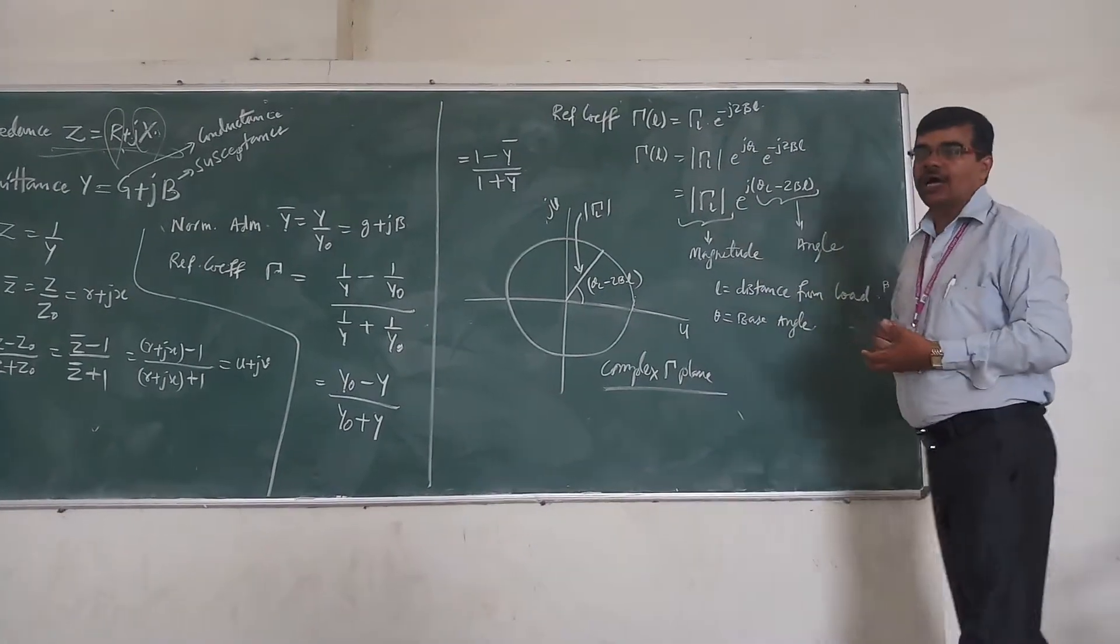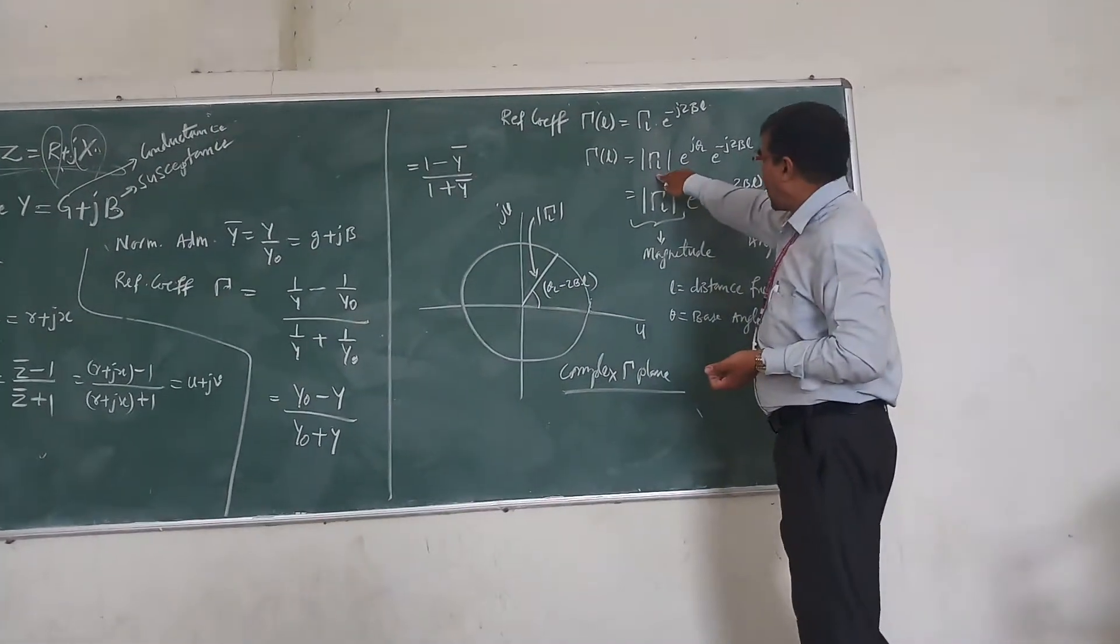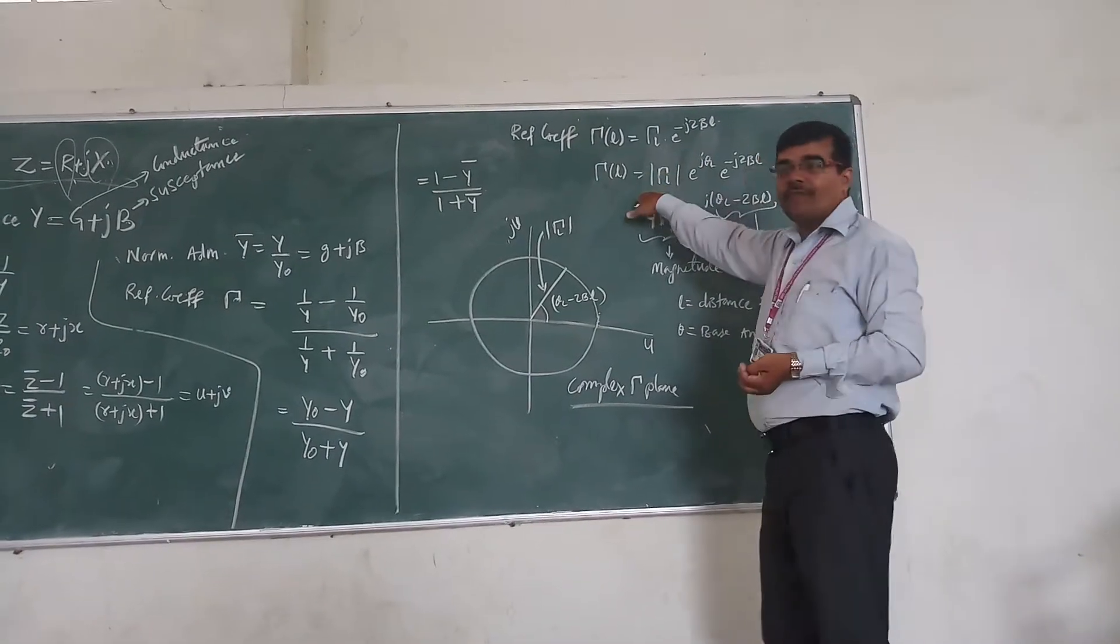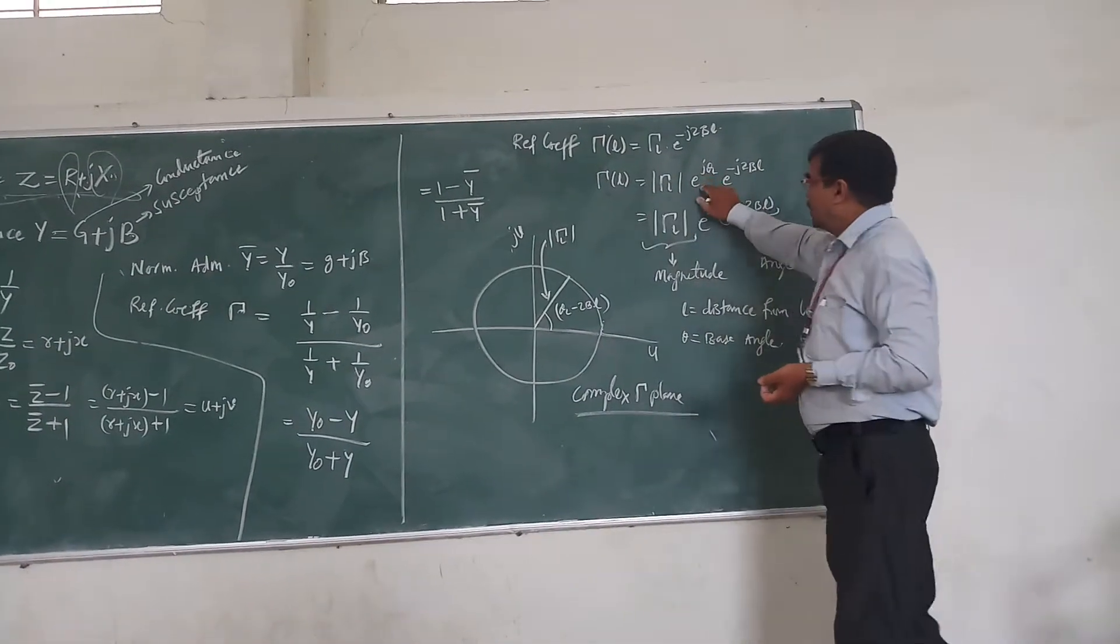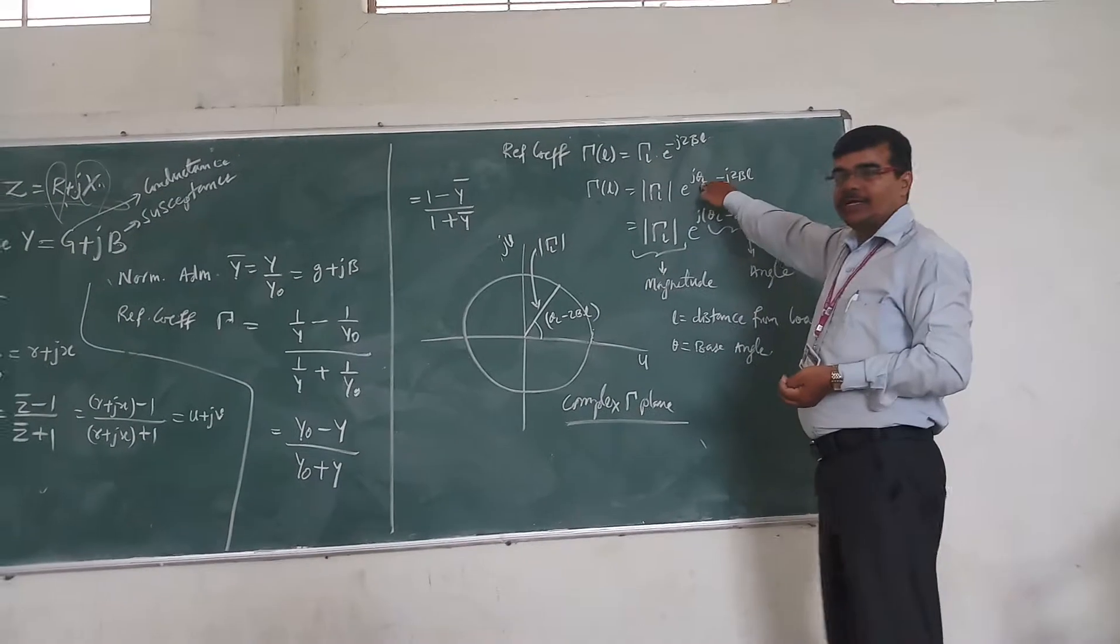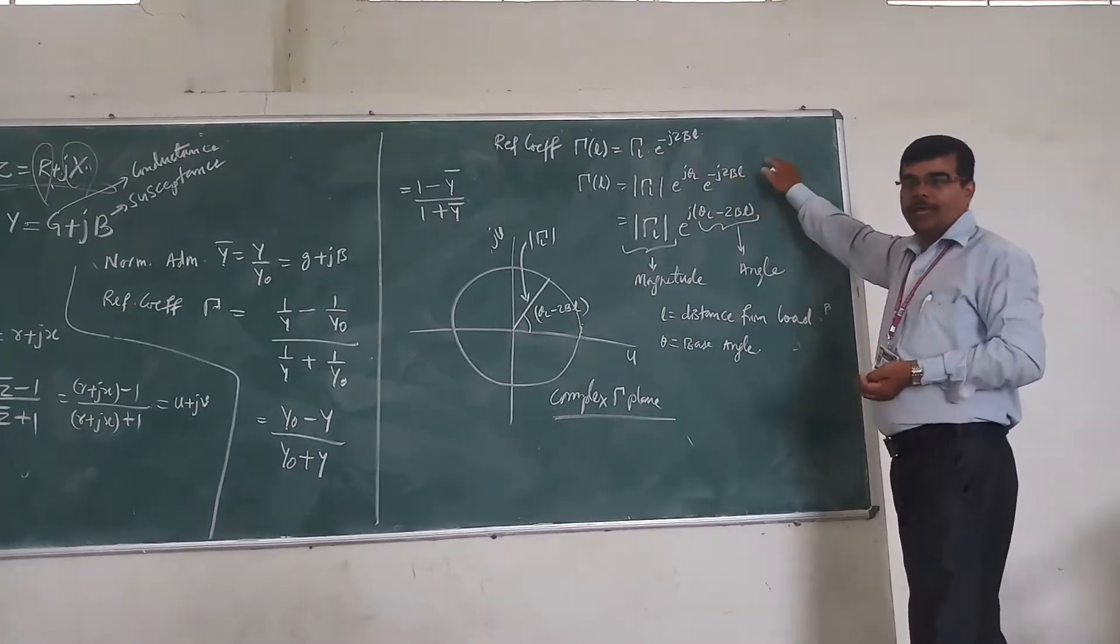If you solve this, we will have gamma L. Here, we have the modulus of that. It is e to the power j theta L, times e to the power minus j 2 beta L.